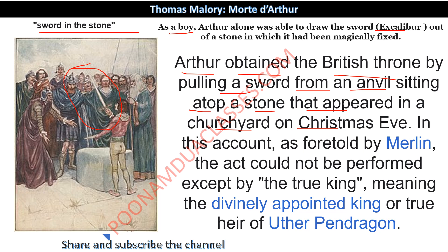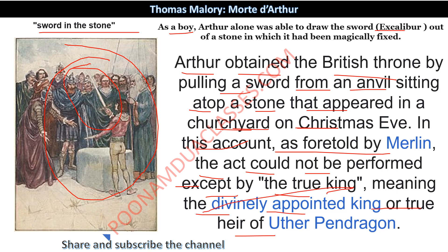You need to understand the basic things. There are many folklore elements that we cannot compare to reality — there are supernatural events, there is mysticism — but we have to understand it when reading a text. It was said that whoever could pull out that sword would become the greatest king ever. Arthur obtained the British throne by pulling that sword — Excalibur — and as foretold by Merlin, Merlin said this person would be a very great king. This was the act that could not be performed except by the true king, meaning the divinely appointed king or true heir of Arthur Pendragon.